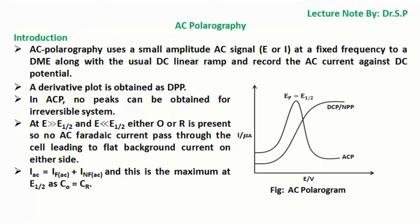AC polarography uses a small amplitude AC signal (E or I) at a fixed frequency applied to a dropping mercury electrode (DME) along with the usual DC linear ramp and records the AC current against DC potential. A derivative plot is obtained as DPP.